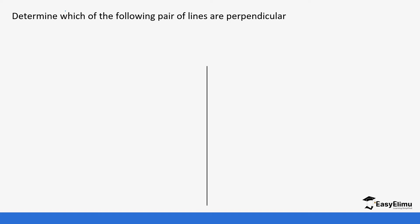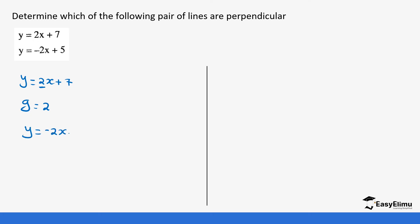Let's do another example. Determine which of the following pairs of lines are perpendicular. We have y equals 2x plus 7, so the gradient of this line is 2. Then y equals negative 2x plus 5, so the gradient is negative 2. If we multiply these two gradients, 2 times negative 2 gives negative 4, which is not equal to negative one. So these two lines are not perpendicular.